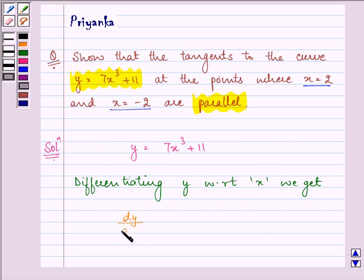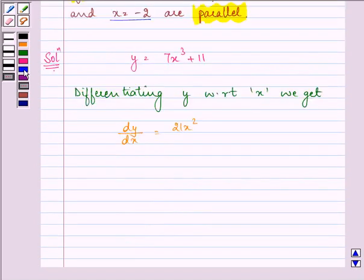dy/dx = 21x². Now at x = 2 and x = -2, the value of dy/dx